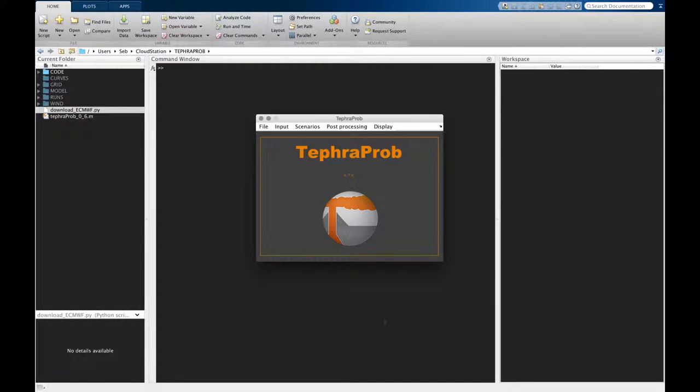At this point you gather all the input parameters necessary to run probabilistic hazard assessment. This is what we want to do now: the stochastic sampling of eruption source parameters and wind conditions for various styles of eruption.